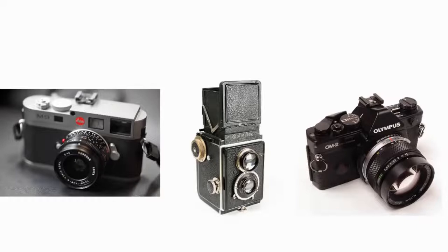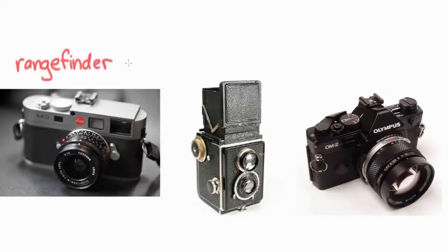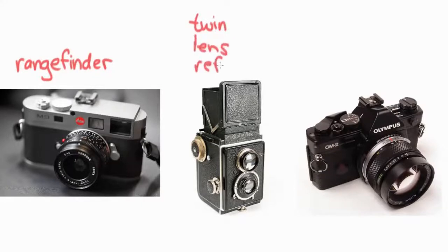Moving away from aerial photography, let's get down to some very practical cameras still often in use today. To the right you find what is probably, among a certain generation of photographers, really the standard: the rangefinder. Then we've also got the twin lens reflex and the single lens reflex.